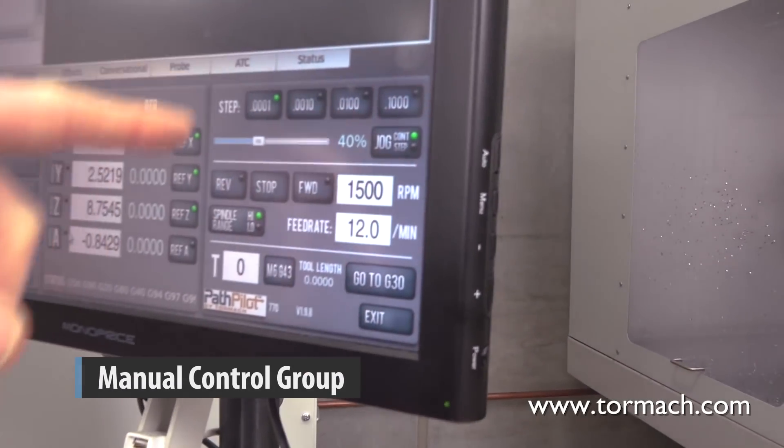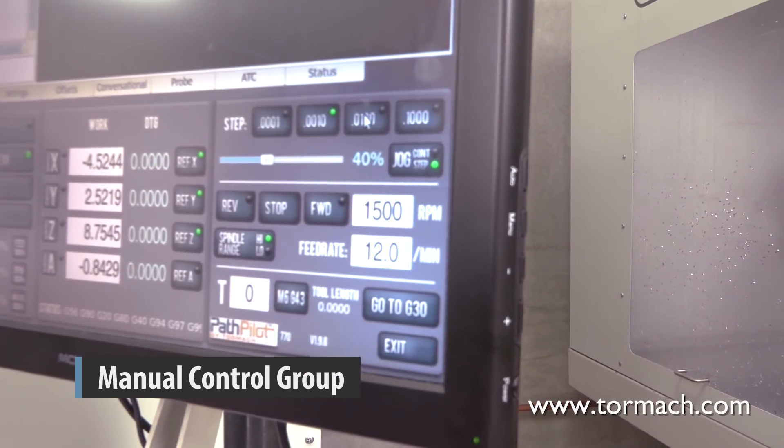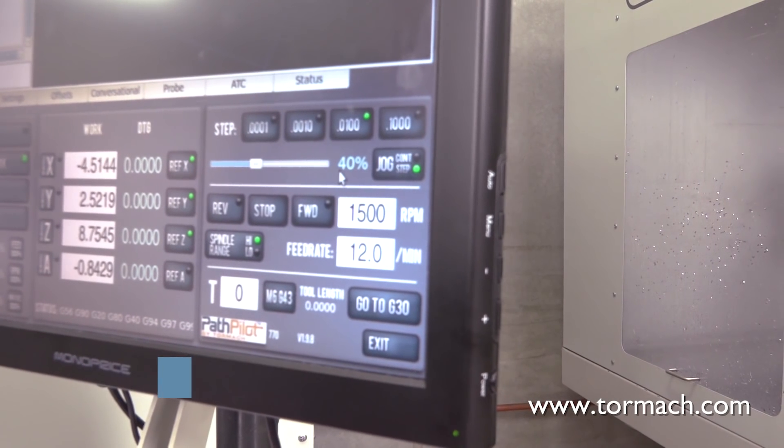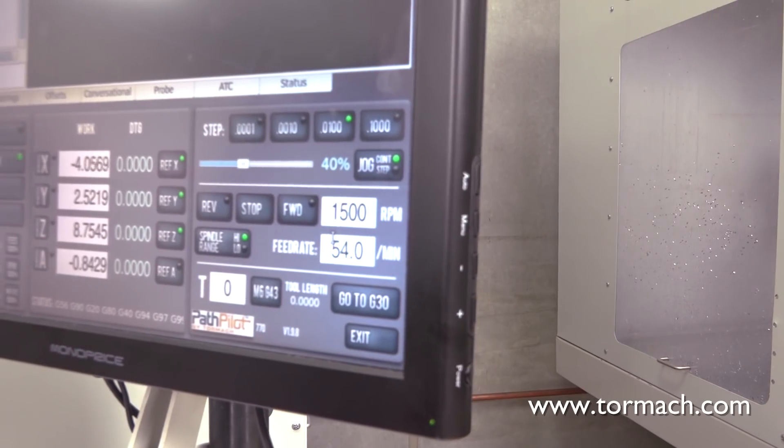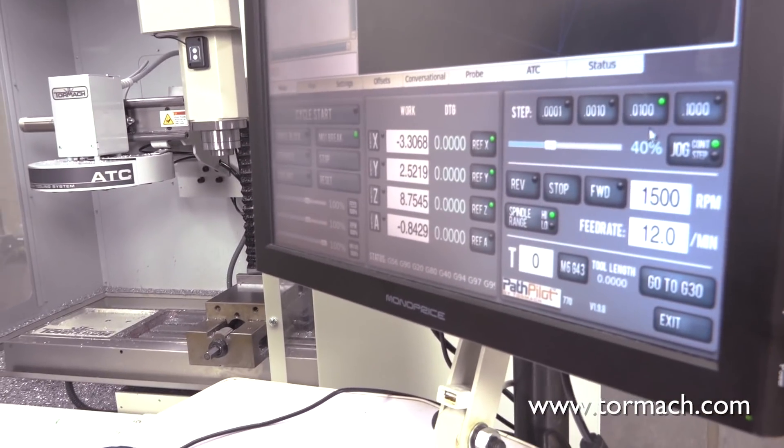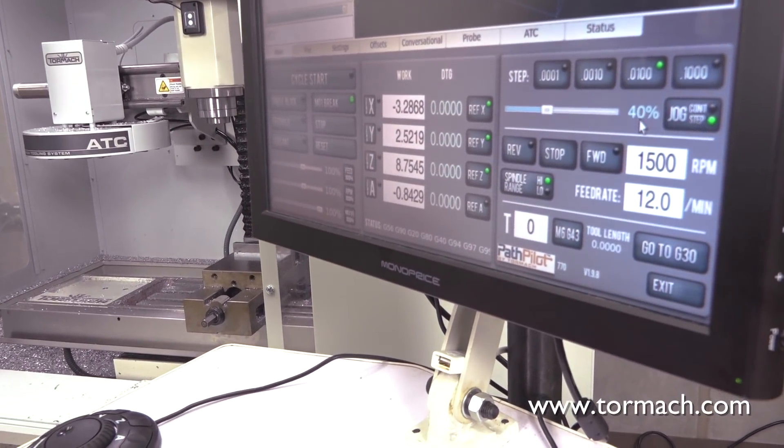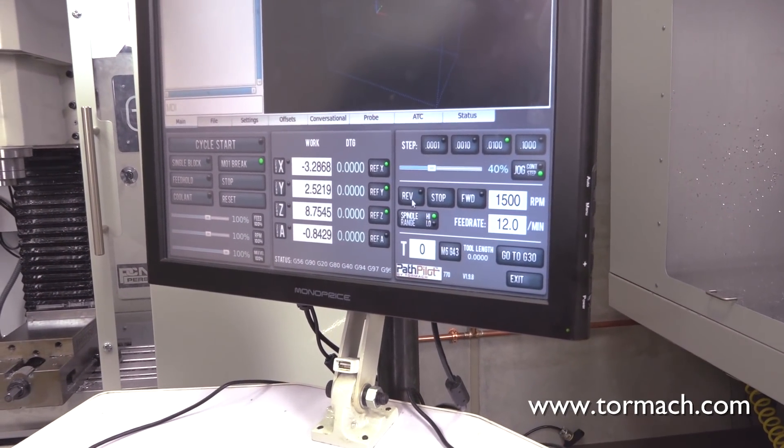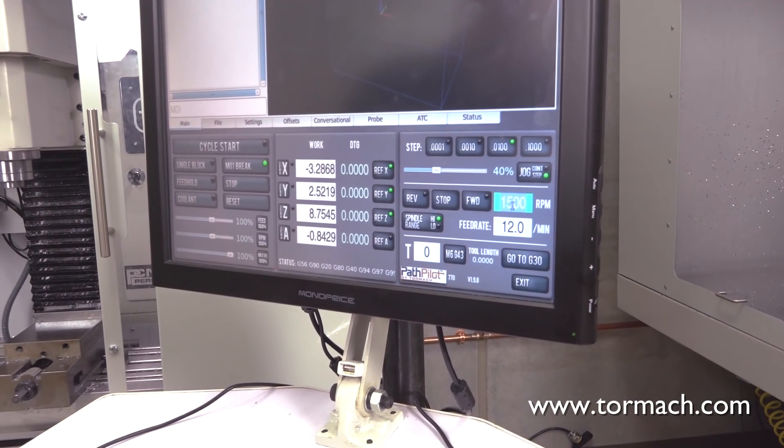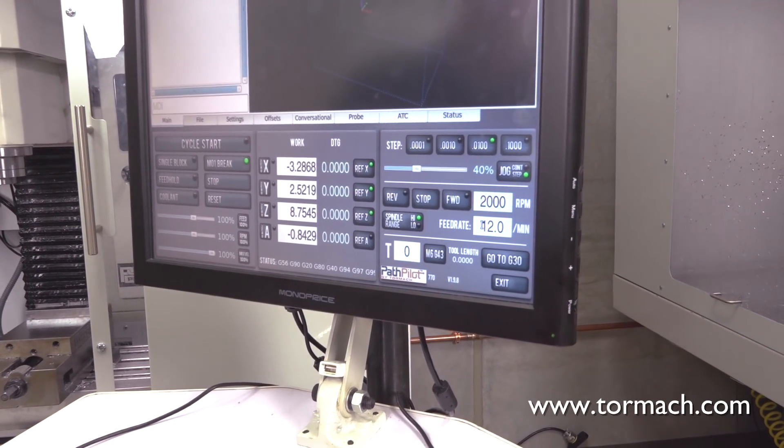Here, we have manual controls. This allows you to choose the step size for jogging if we're jogging the machine, and also allows you to switch between continuous jogging and step jogging. Here, we have some spindle controls. Forward starts the spindle in forward mode. Reverse starts at reverse. You can enter in the RPM here, etc.